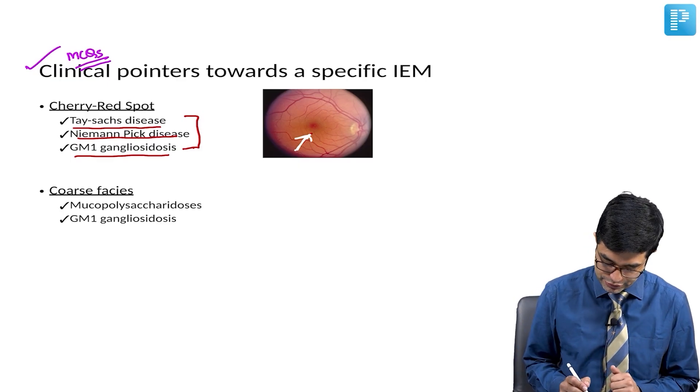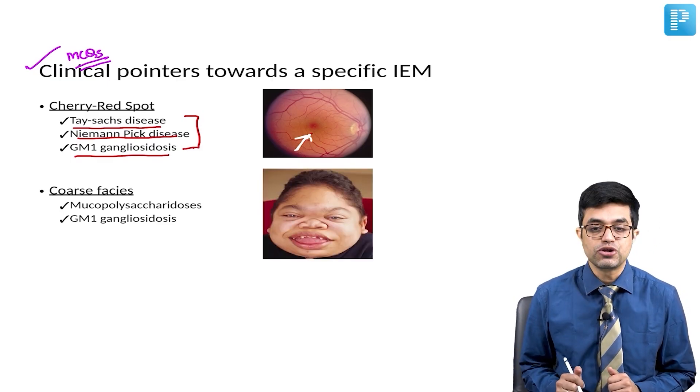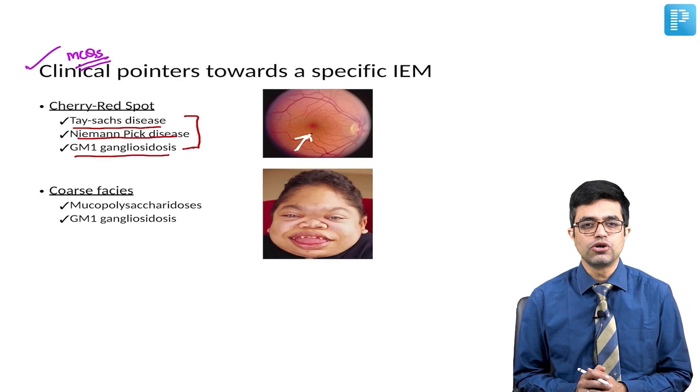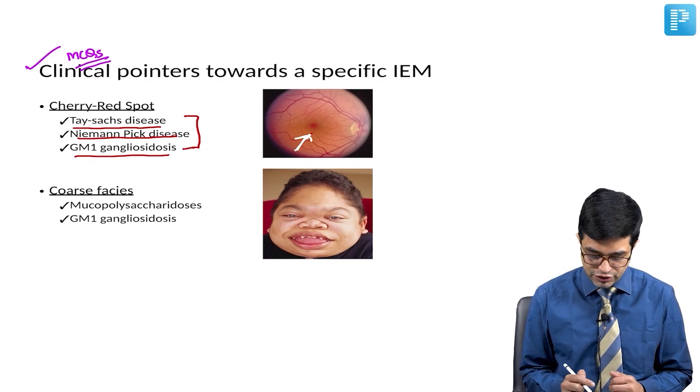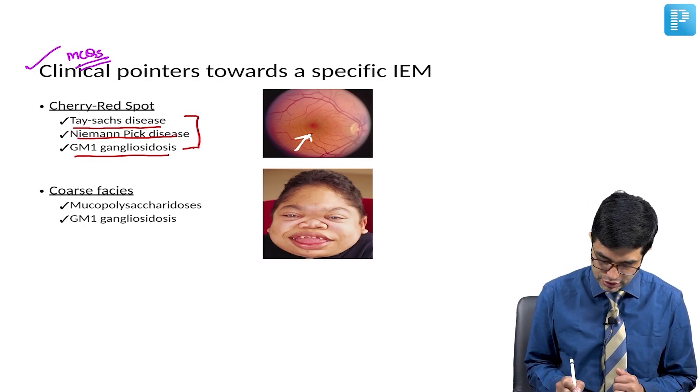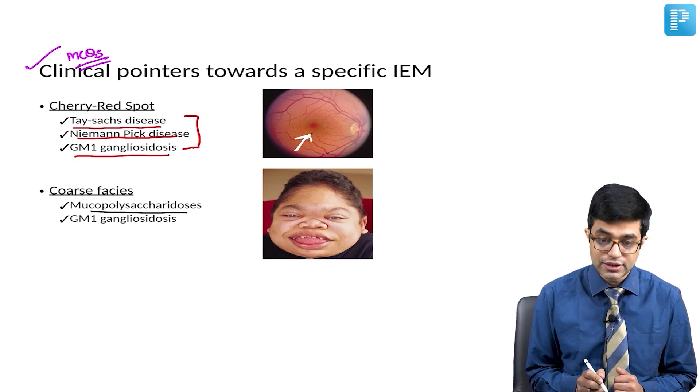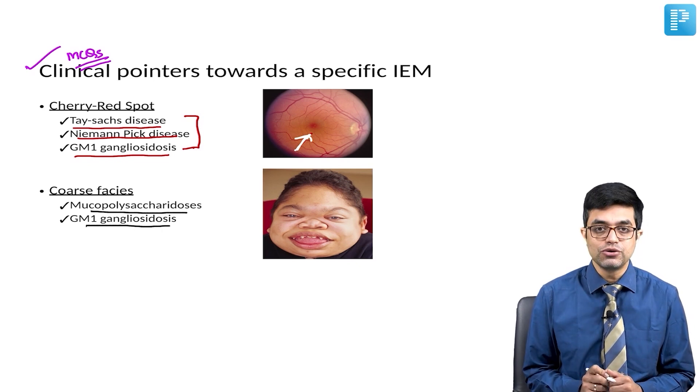Then you have coarse facies. Look at this picture. This is the typical representation of a child having coarse facies. Coarse facial features can be seen in conditions like mucopolysaccharidosis as well as GM1 gangliosidosis.